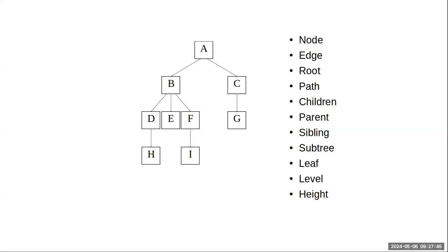Correction: E is also a leaf — I forgot that one. So we have four leaves: H, E, I, and G. E is hiding there in the middle and doesn't have a descendant. Good catch.